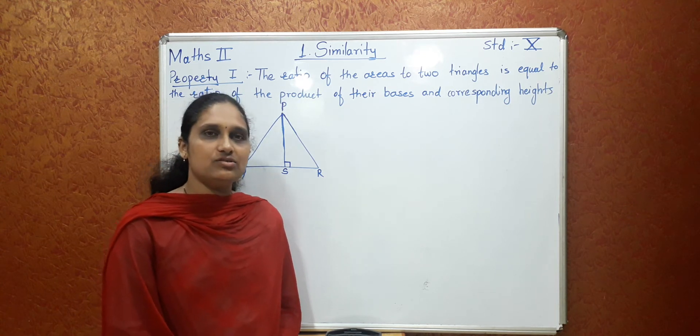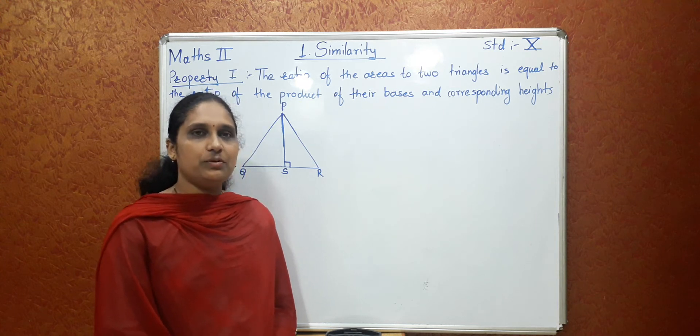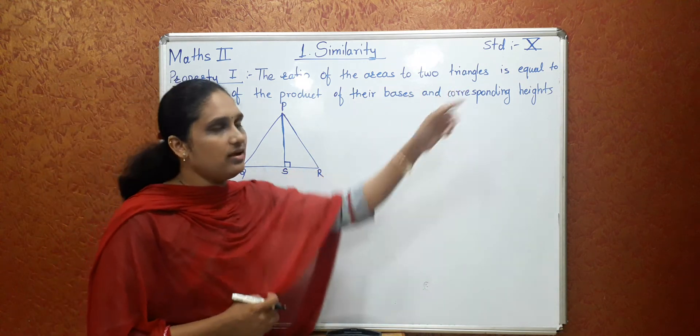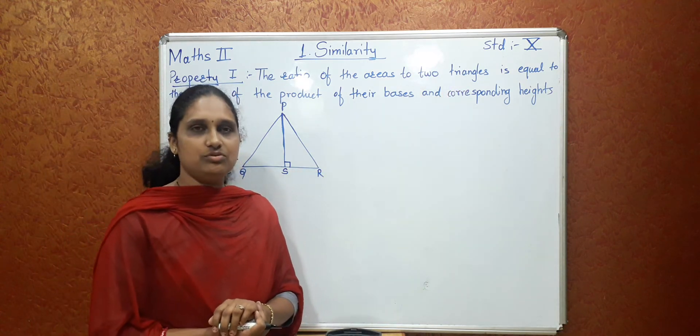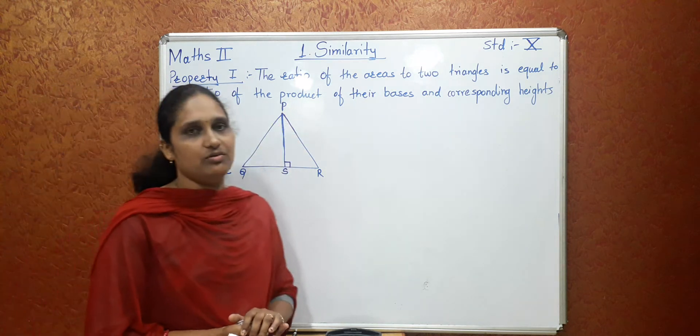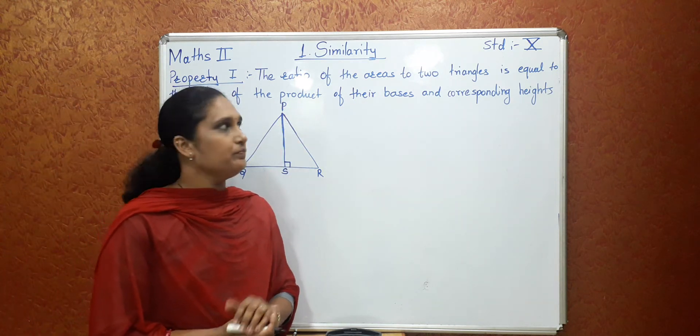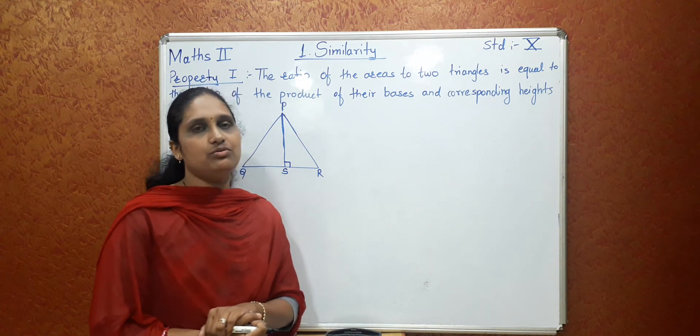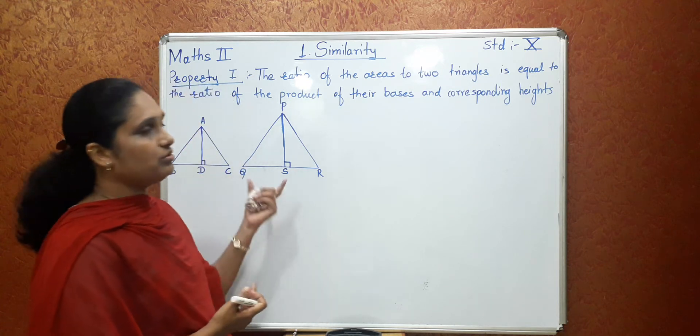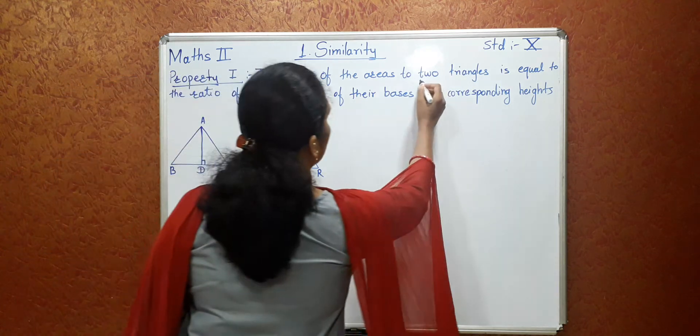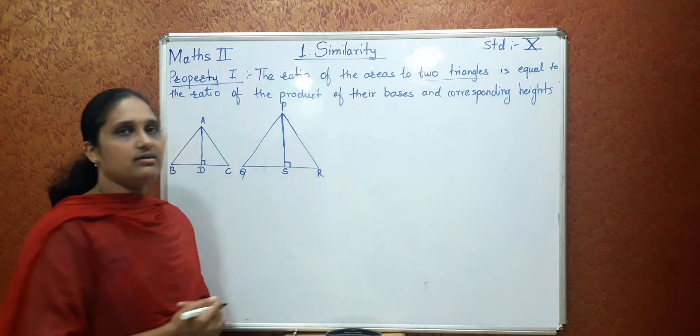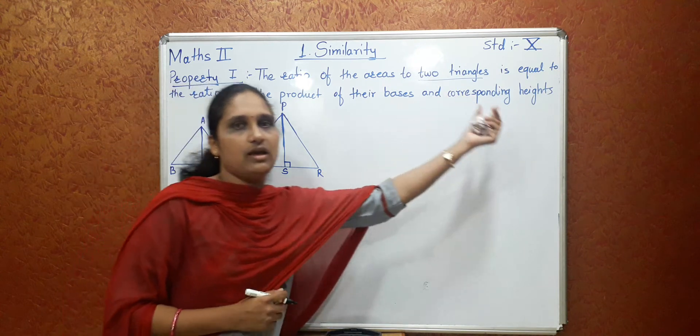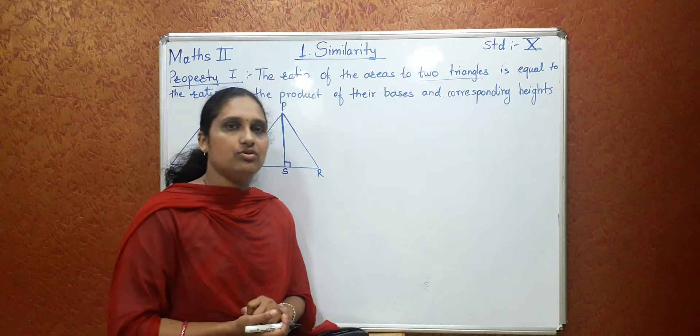So we will first see the properties of similarity. The first property of similarity is the ratio of the areas of two triangles is equal to the ratio of the product of their bases and corresponding heights. So to prove this property we need to draw two triangles. Because in the property here it is mentioned two triangles, so we will draw two triangles where we need its base and height also. So accordingly we will draw the figure.